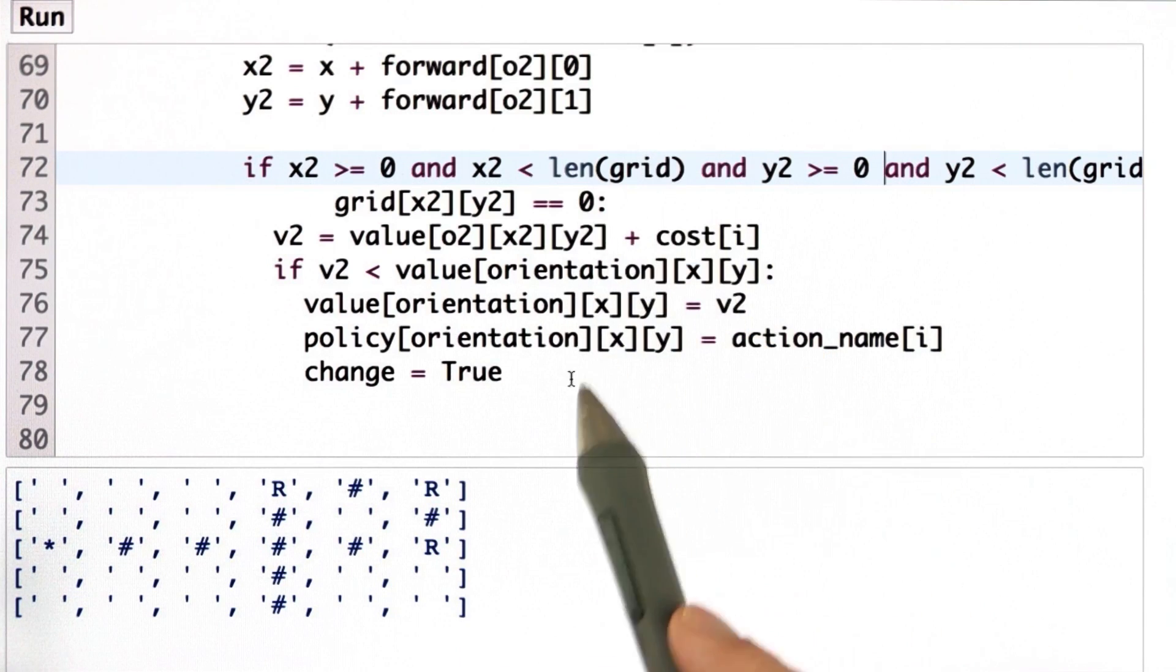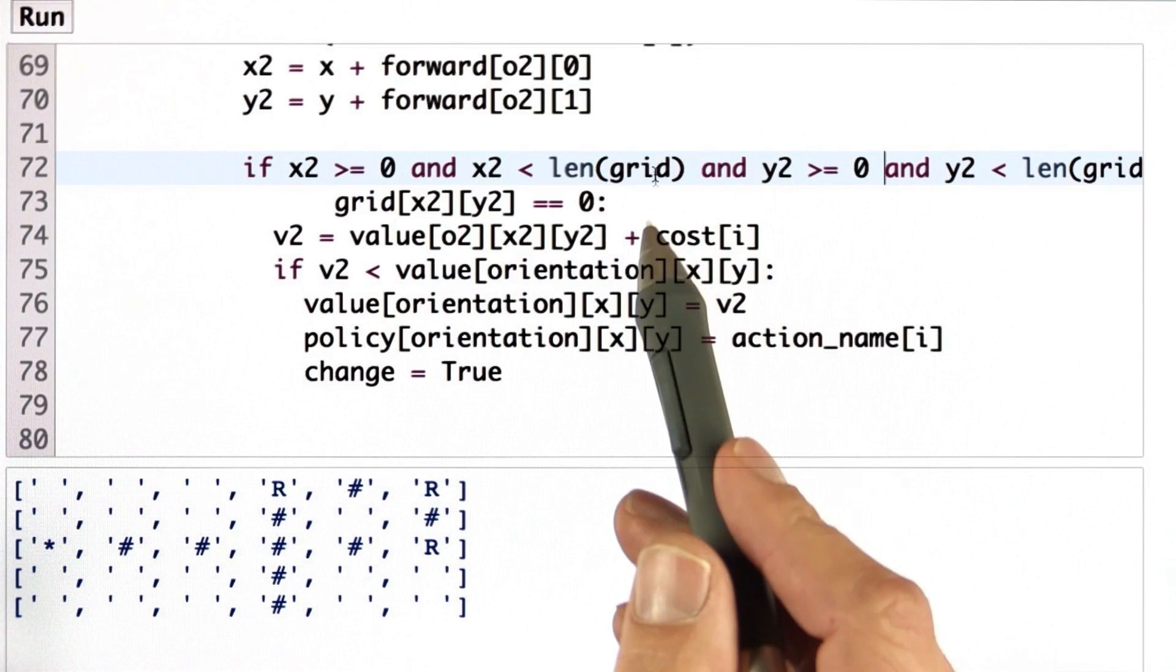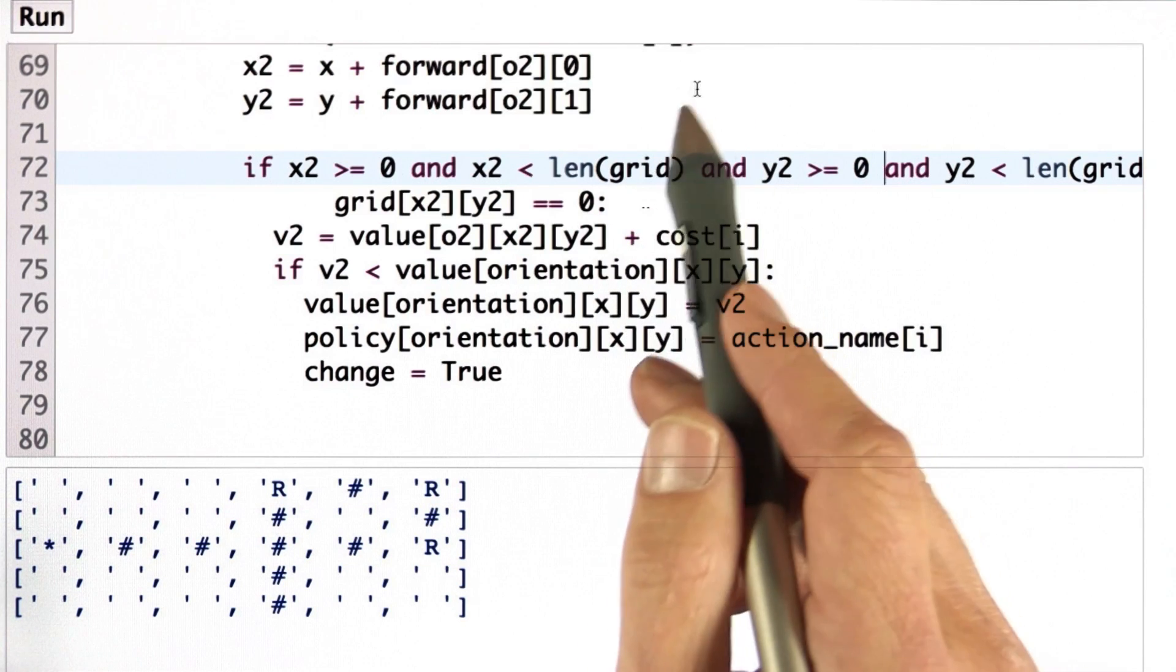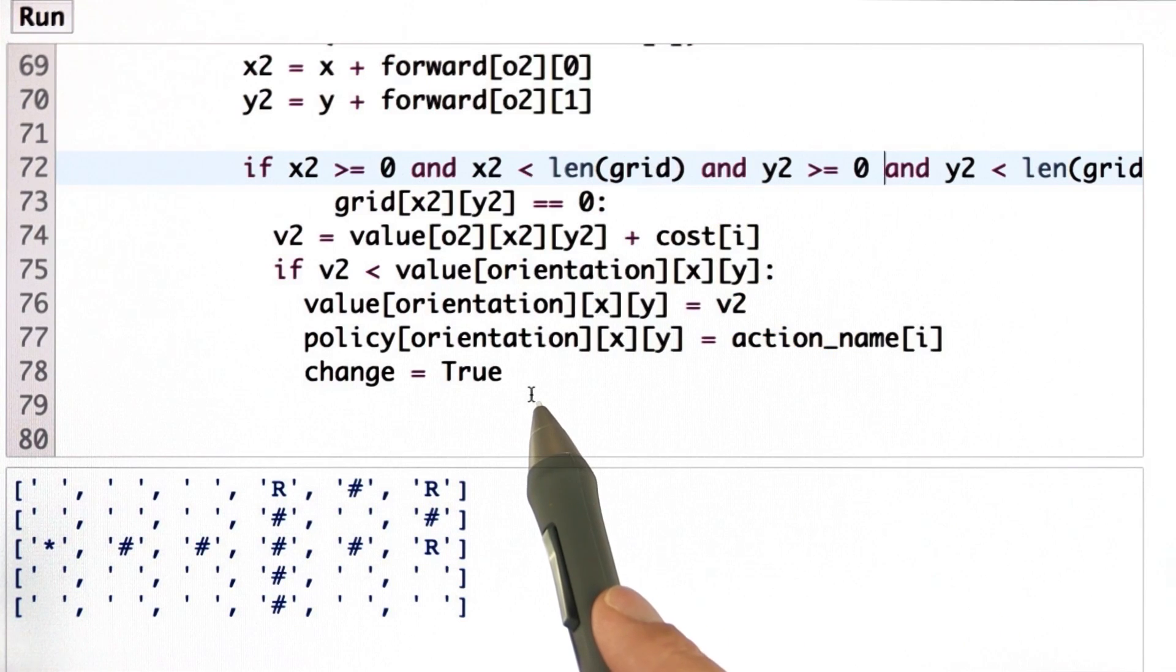This is all effectively the same code as we had before when we did dynamic programming in a two-dimensional world. It gets us the value function, and it gets us the policy action.